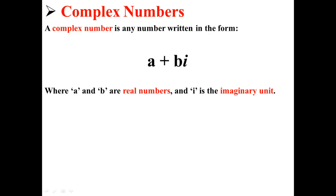In the past, I talked about complex numbers. A complex number is any number written in the form a plus bi, where a and b are real numbers and i is the imaginary unit.